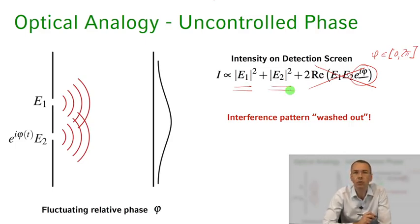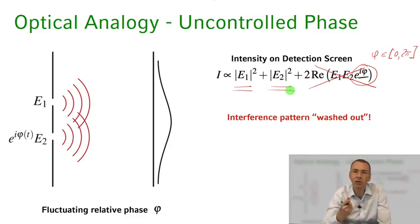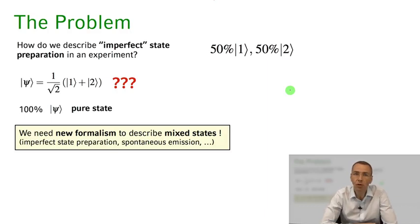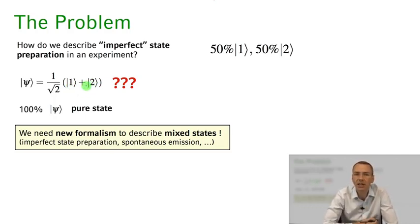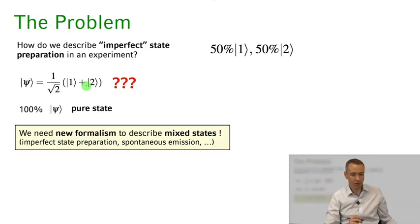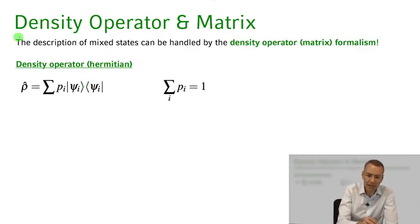In the case where you really don't have control over this relative phase — which happens very often in an experiment — you're not going to see any interference phenomena. This is the whole point we're trying to address: we nevertheless have to describe situations where we don't control such a phase between states one and two in our system. It turns out that the Schrödinger formalism doesn't allow us to describe such a situation. You really need a new formalism — a new way of describing such mixed states. One way to do this is through the density operator and the density matrix, which I want to introduce now.